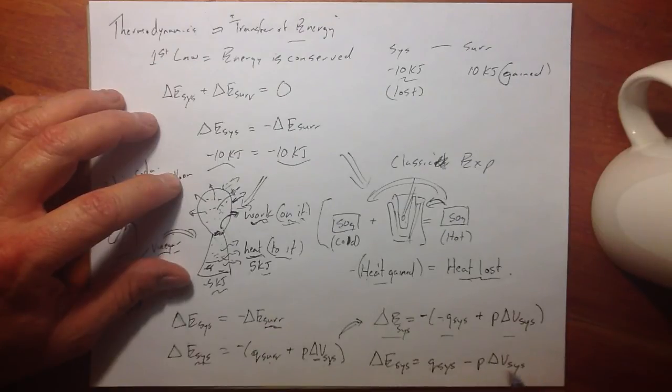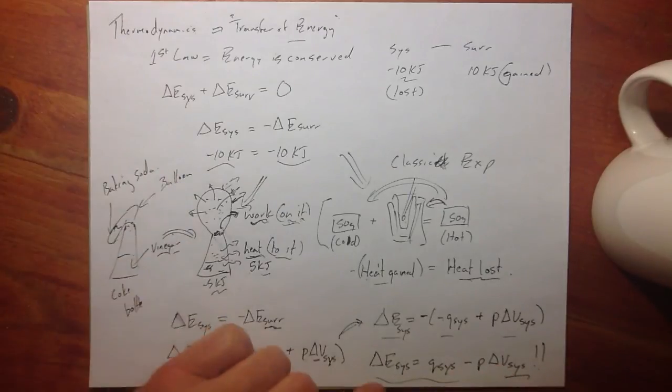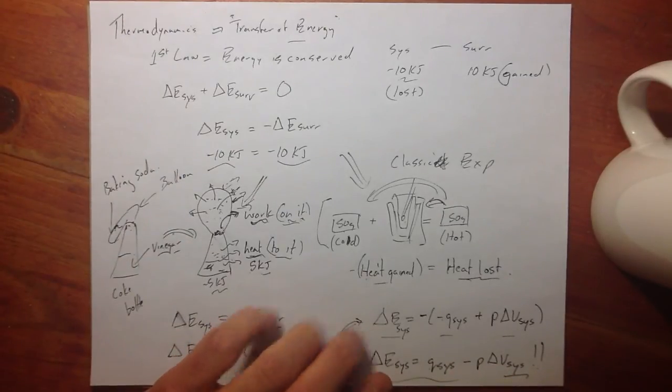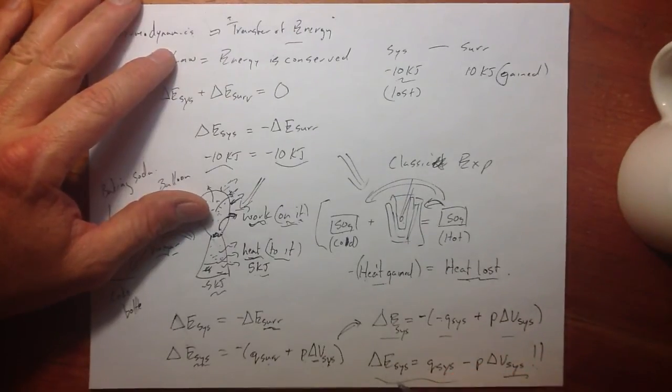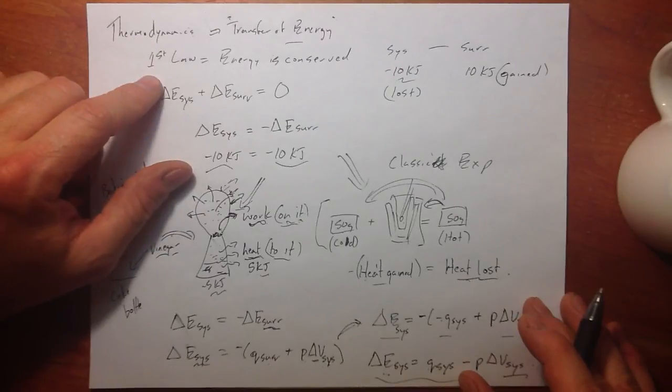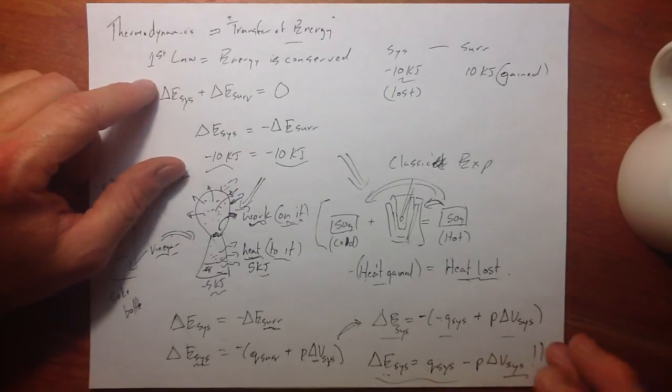Voila! That's a classic equation from your college textbooks used to determine the energy change of a system, internal energy change of a system. By looking at heat, loss by the system, and work done by the system. All that derived from the first law of thermodynamics. Bye-bye!